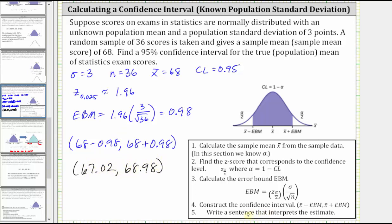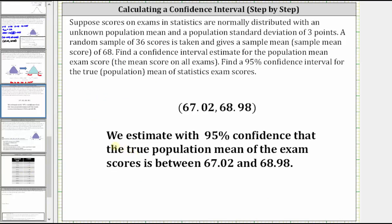The last step is to write a sentence to interpret the results. So what we can say is that we estimate with 95% confidence that the true population mean of exam scores is between 67.02 and 68.98.